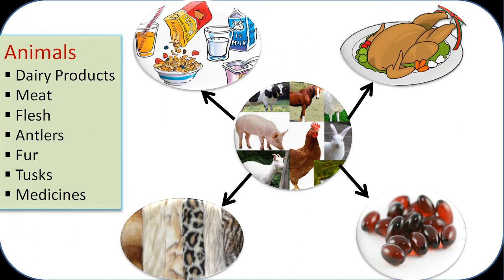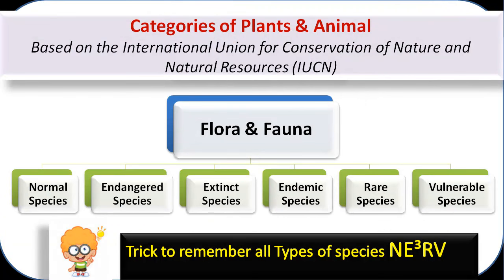Animals are also resources. They provide us dairy products, meat, leather, antlers, fur, tusks, and medicines. Based on the International Union for Conservation of Nature and Natural Resources, i.e. IUCN, flora and fauna is basically classified into six categories.